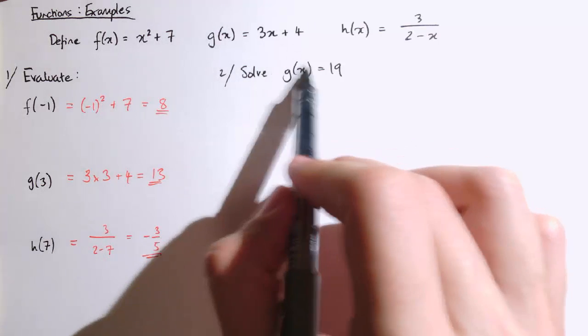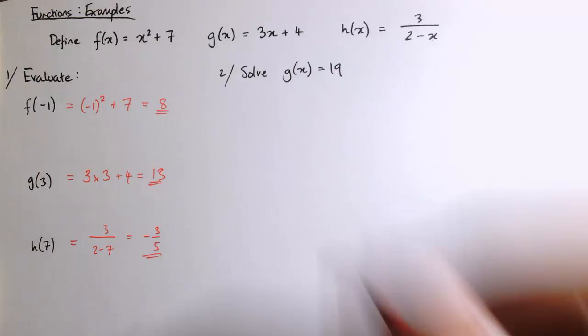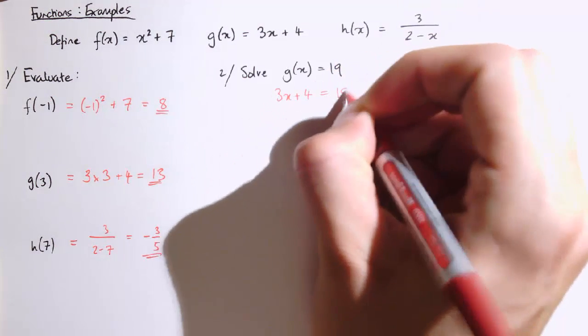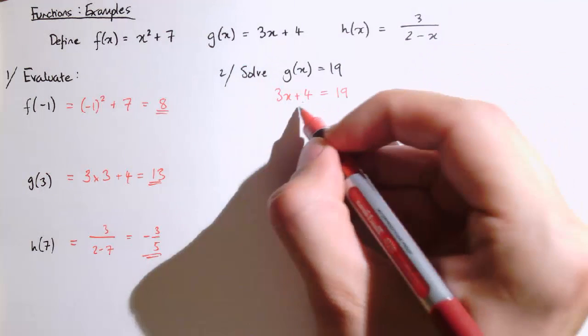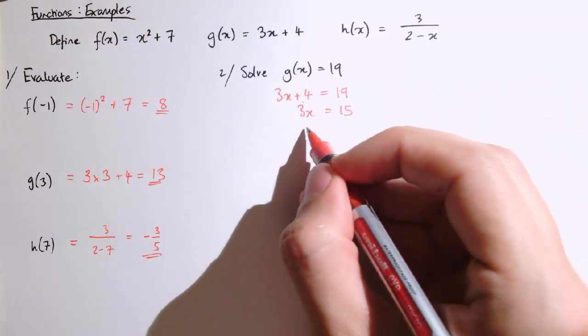To work this out, g of x equals 3x plus 4, so we can replace g of x here with 3x plus 4. So 3x plus 4 equals 19. And now we can solve this equation. Subtracting 4 from each side gives 3x equals 15, and dividing by 3 both sides gives x equals 5.